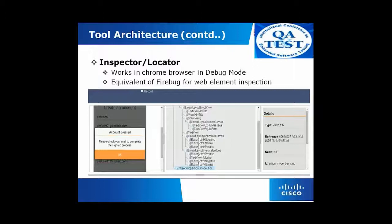I am going to speak about the inspector and locators. Cylindroid provides a built-in inspector. It works in a Chrome browser in debug mode — equivalent to Firefox Firebug, XPath Checker, or XPath Viewer. In this example we are trying to get the XPath or the ID of the OK button. You can see 'view stubbed' is being selected. It's a type of view stub and the ID is action_mode_bar_stub. This is how we take the IDs or XPaths for web or mobile.